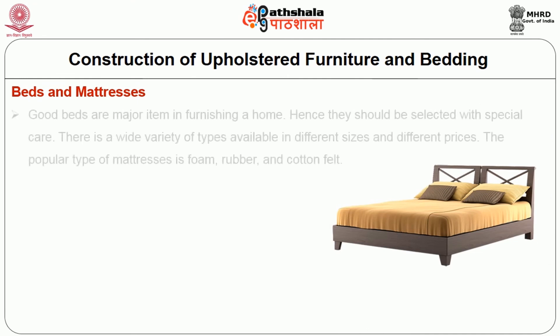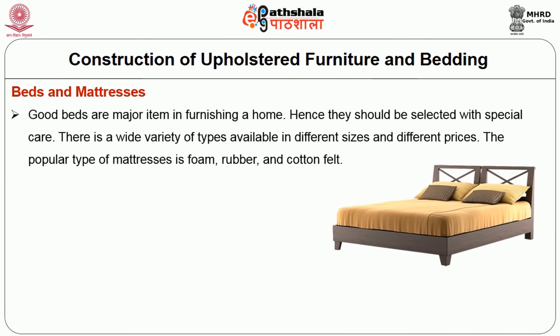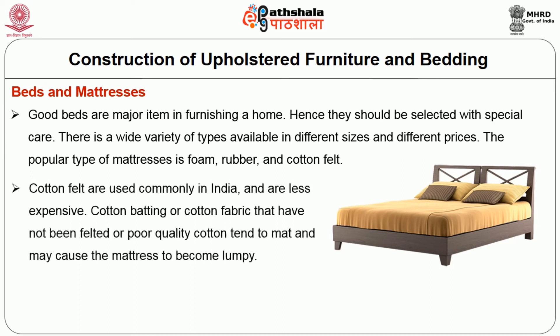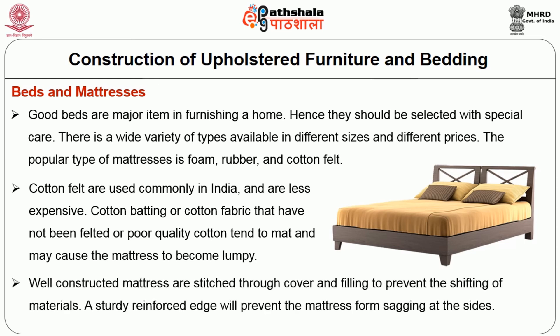Beds and mattresses: Good beds are a major item in furnishing a home and should be selected with special care. There is a wide variety of types available in different sizes and prices. The popular types of mattresses are foam rubber and cotton felt. Cotton felt is commonly used in India and is less expensive; however, poor quality cotton tends to mat and may cause the mattress to become lumpy. Well-constructed mattresses are stitched through cover and filling to prevent the shifting of materials, and a sturdy reinforced edge will prevent the mattress from sagging at the sides.